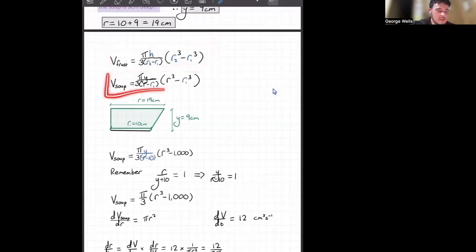So all we're doing is taking our frustum volume equation that we worked out earlier, and we're just going to change it for the soup variables. Instead of our height being h, our height is now the depth of the soup, which is just y. So that's why the h changes to a y. Our r1 is still r1. And our r2, instead of being r2, is now just r.